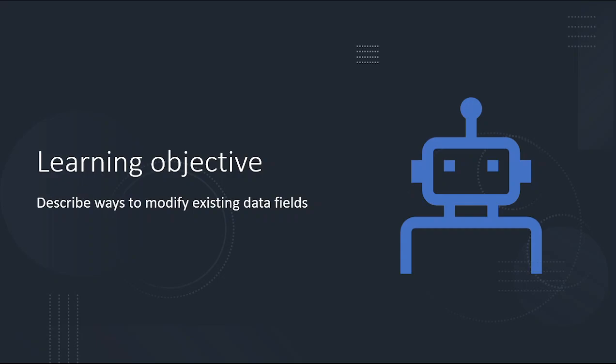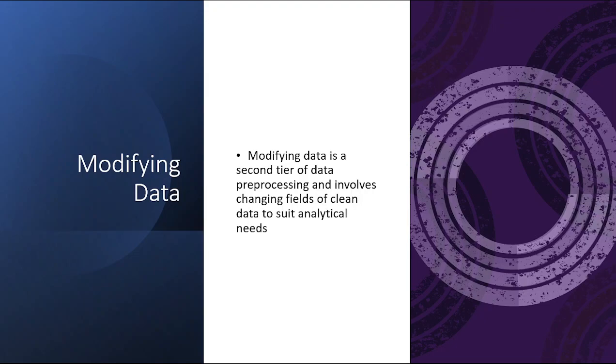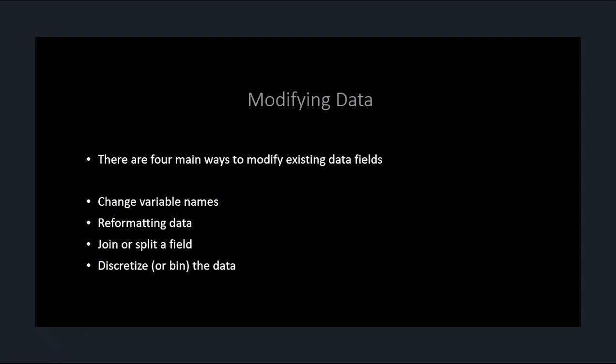The other thing about data wrangling — again, we're not going to do this in this class, but I want to talk about it — is modifying existing data fields. This is not cleaning; this is taking data in a column and changing it to a slightly different representation. Modifying data is a second tier of data pre-processing, with cleaning being the first. Once the data is cleaned, you need to modify the fields in some form. There are basically four ways to modify data.